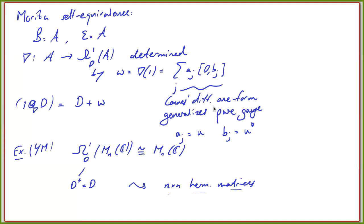Here we agree on the convention that the speed of light is one and the Planck constant is one, which is completely fine. The connection to particle physics models is done by looking at the action functional and identifying it with what particle physicists write down, which then gives the relations between the various coupling constants and mass scales. Thanks very much.